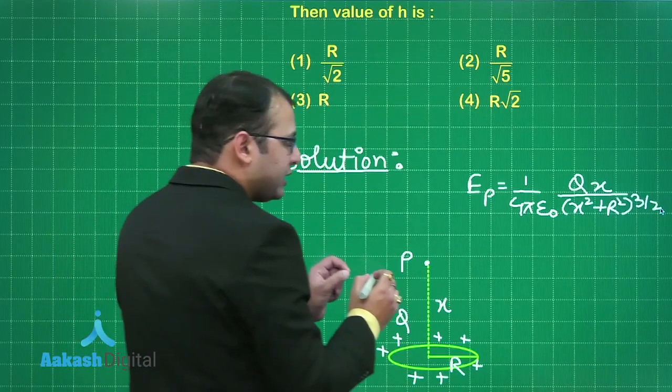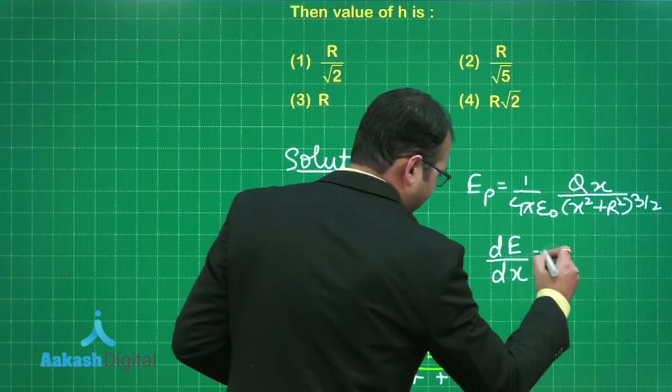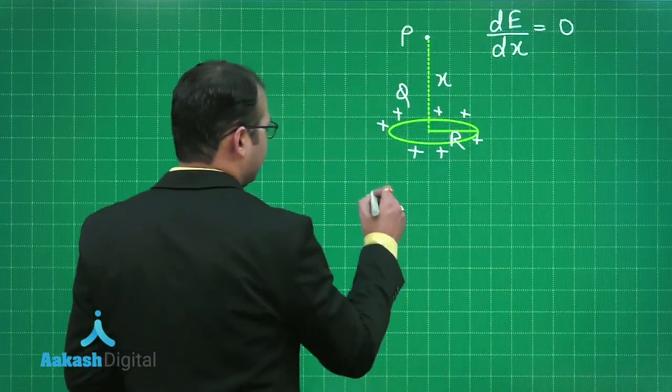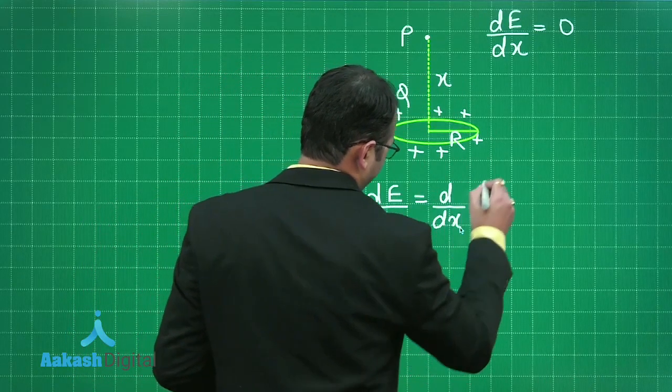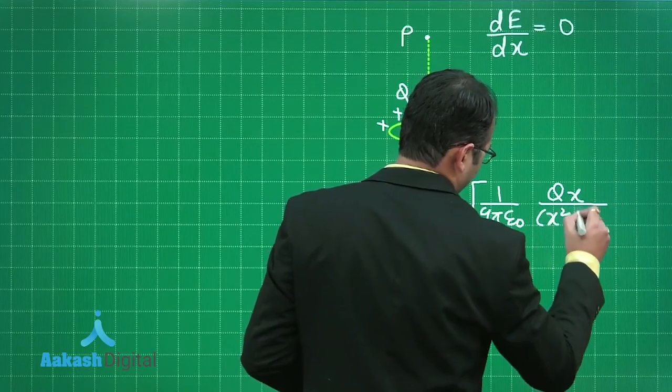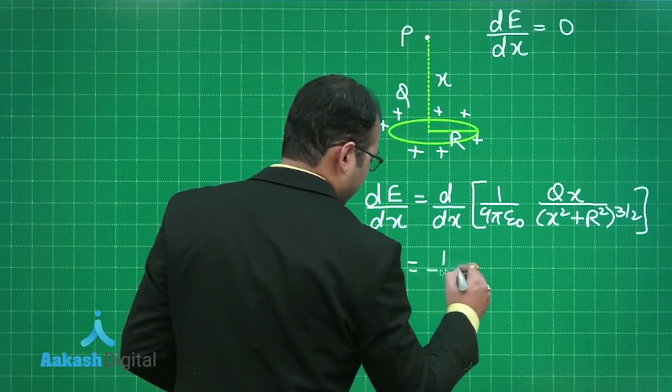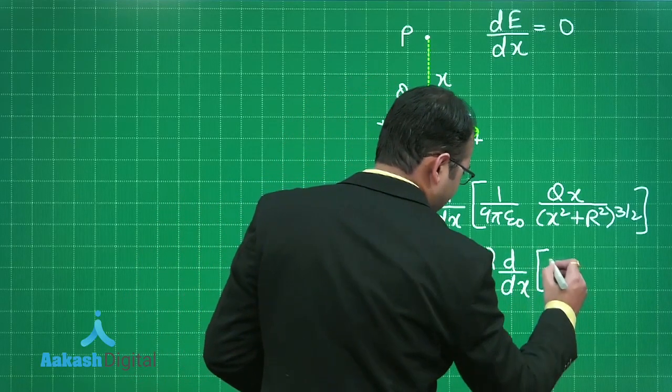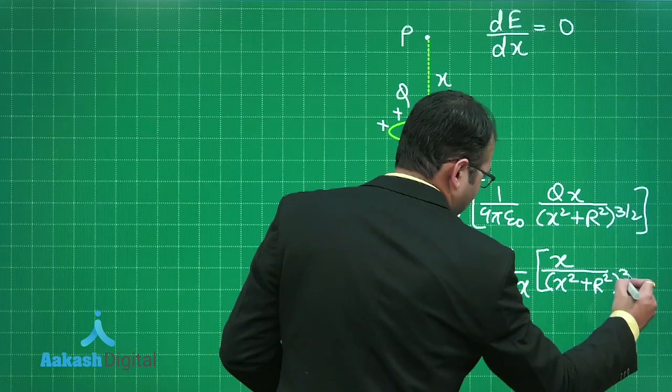Now if at point P the electric field is maximum, then in that case the differential of electric field at that point should be 0. So I'll just differentiate this equation. On differentiating dE by dx, d by dx, 1 upon 4 pi epsilon naught Q x divided by x square plus r square power 3 by 2. What will happen is 1 upon 4 pi epsilon naught it will come out Q, so d by dx of x divided by x square plus r square 3 by 2, right?